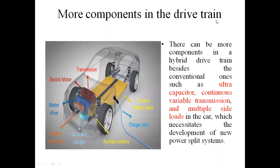The next slide covers More Components in the Drive Train, which is also one of the issues. In a conventional vehicle, we use only five components: Engine, Clutch, Transmission, Gearbox, and Wheels. But in a Hybrid Vehicle — both Series and Parallel — we have more components. There are two sources: a conventional source such as fuel (petrol and diesel), and secondary sources such as Ultra Capacitors, Fuel Cells, and Batteries. In a Parallel Hybrid Vehicle, we also have Speed Coupling and Torque Coupling, making control very difficult as components increase.